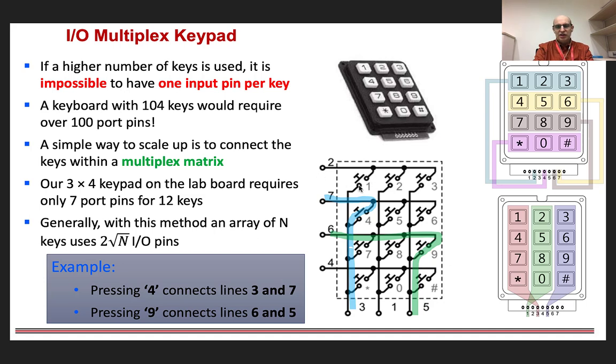If we can connect that to a microprocessor, it only actually needs 7 pins on the microprocessor to control 12 pins on a keypad. And in general, when we have a keypad with N pins, we only need two root N. Sorry, when we have a keypad with N buttons, we only need two root N I/O pins to do this.